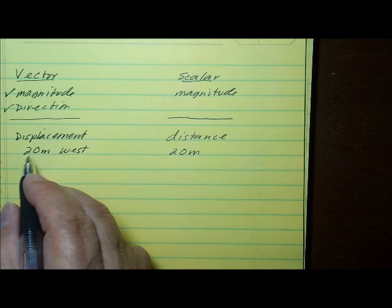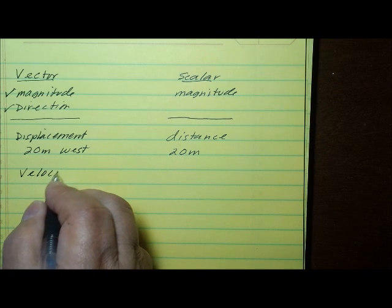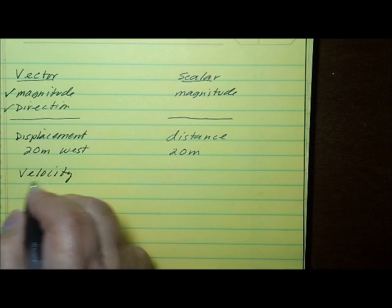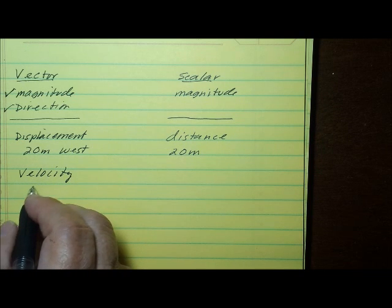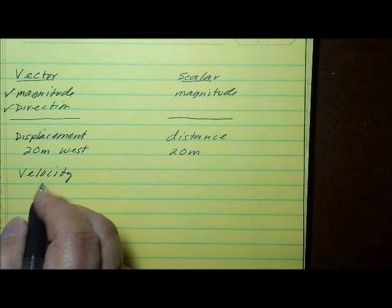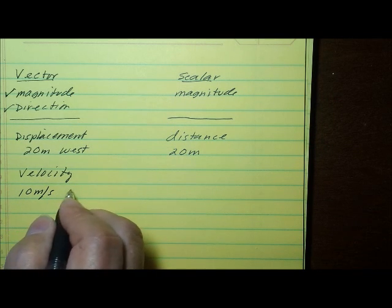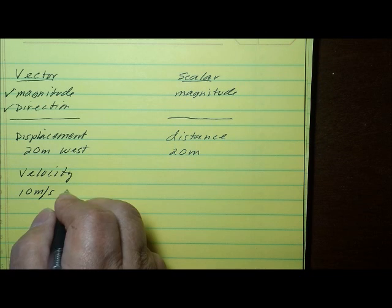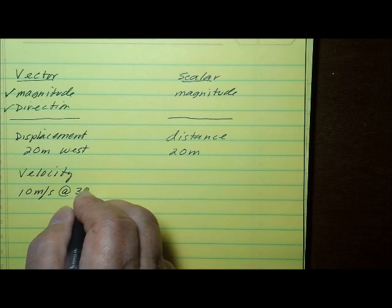Another example of a vector quantity would be velocity. Velocity is a vector quantity because velocity has both a magnitude and a direction. An example of a velocity would be 10 meters per second at a direction of 30 degrees.